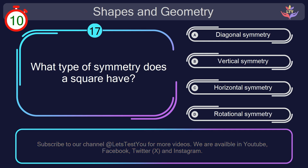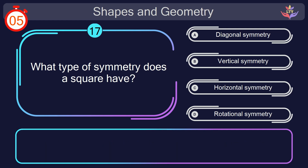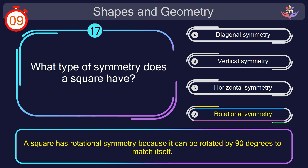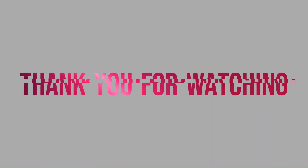Question number 17. What type of symmetry does a square have? Your countdown started. 1, here we go. The correct answer is option D. Rotational symmetry. A square has rotational symmetry because it can be rotated by 90 degrees to match itself.